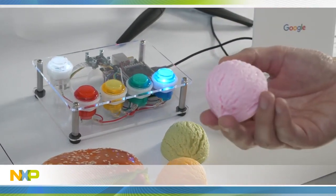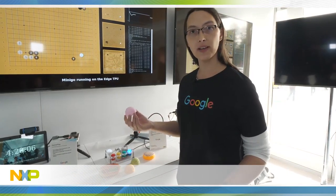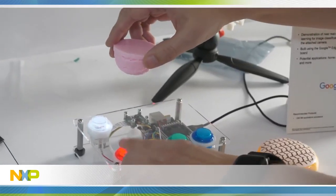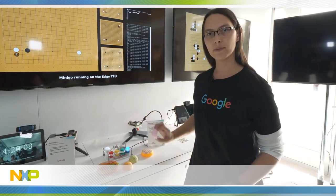I can now train it on an object. In this particular case I'm going to use this ice cream. So hold the ice cream over, press the button, and now it can differentiate between background and ice cream.